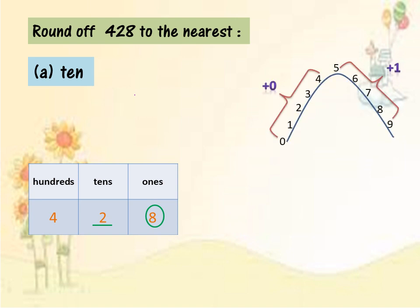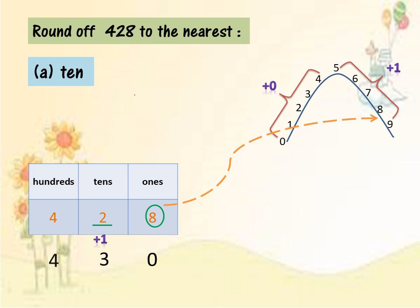Now, refer to the diagram of the hill. Where is digit 8? It's in the 5–9 range, so plus 0 or plus 1 for 8? It's plus 1. So we write plus 1 at the tens place value. After the tens place, we change to 0. Then 2 plus 1, we get 3. And at the hundreds place, we remain the same — kekalkan 4. So, after rounding off, the answer is 430.